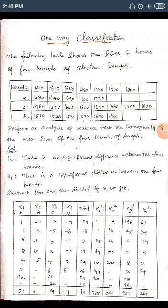We set up a table with columns x₁, x₂, x₃, x₄ for Brands A, B, C, D respectively, and also compute x₁², x₂², x₃², x₄². We square each value, sum column-wise, and find the grand total. The grand total T = 98, computed row-wise and column-wise.